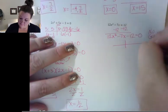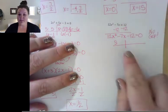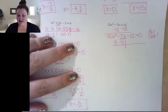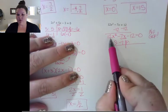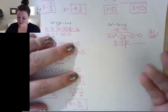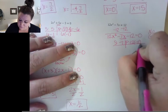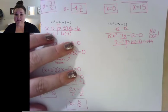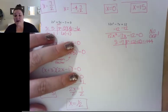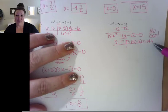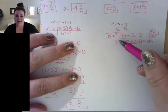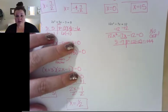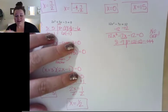So I go ahead and look at my sum/product chart. My sum is my middle coefficient, which is negative 7. And my product is my first coefficient times my last coefficient — so 12 times negative 12 is negative 144. If you're not sure what multiplies to get 144 and combines to 7, you can take your calculator and do 144 divided by 1, 144 divided by 2, and keep going. You only have to go as high as the square root of 144, which is 12.